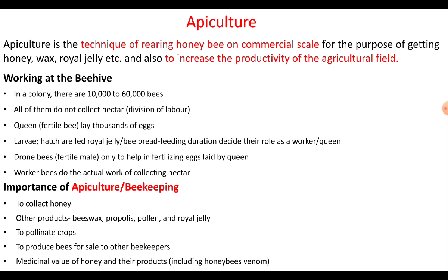Let us see the working at the beehive. In a bee colony, there are about 10,000 to 60,000 bees, but all of them do not collect nectar — there is a strict division of labor. The queen, which is a fertile bee, lays thousands of eggs and the larvae that hatch are fed with either royal jelly or bee bread. Depending upon the duration of the feed, it decides their role as a worker or the queen. The drones in the colony are the male fertile bees whose job is to help in fertilizing the eggs laid by the queen.